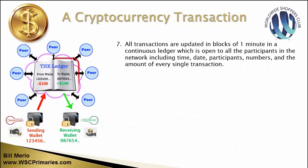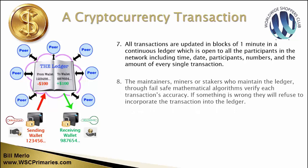All transactions are updated in blocks every one minute in a continuous ledger which is open to all participants in the network. This includes time, date, participant wallet numbers, and the amount of every single transaction. When we talk about participants, it's the wallet numbers being used - not names - along with the encrypted identifiers of the wallets involved.